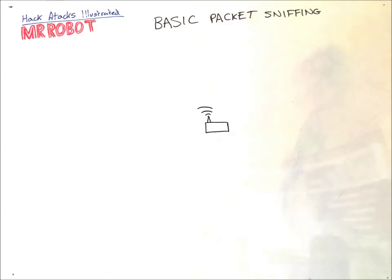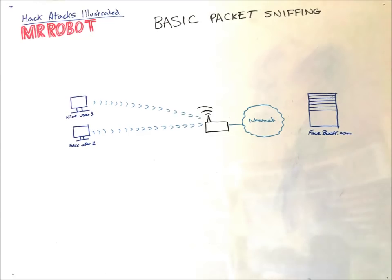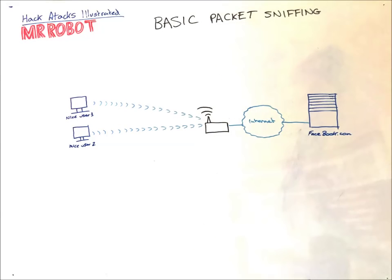In our example we have a wireless router, two computers, and a server. We'll say they're niceuser1, niceuser2, and facebook.com. So normally our nice users connect using Wi-Fi to the router. The router connects to the internet, and Facebook is also connected to the internet.